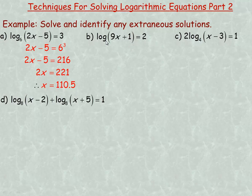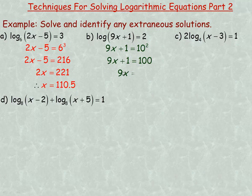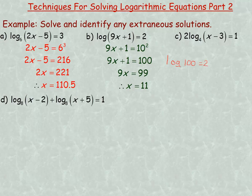For the second one, if you don't see a base, the base is automatically 10 — it's like having a 10 there. If the base is 10, you don't normally write it in. To rewrite in equivalent exponential form: 10 to the power of 2 equals 9x plus 1. Of course 10 squared is 100. Subtracting 1 from both sides gives 9x equals 99, then divide by 9 to get 11. You can check: 9 times 11 is 99, plus 1 is 100. So we have the logarithm of 100 equals 2, which is true because 10 raised to the power of 2 equals 100. So 11 is the correct solution.